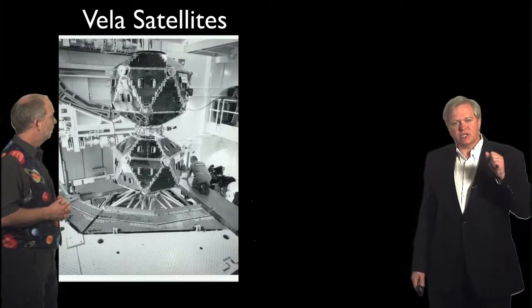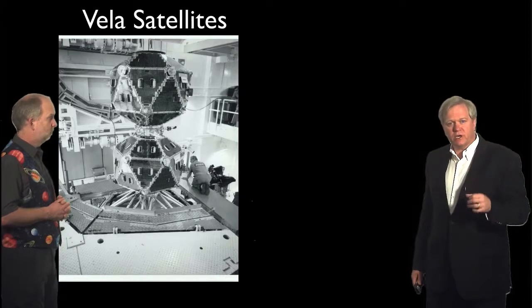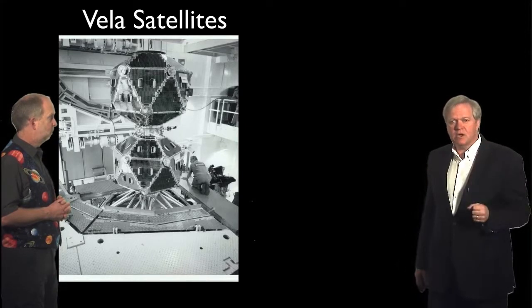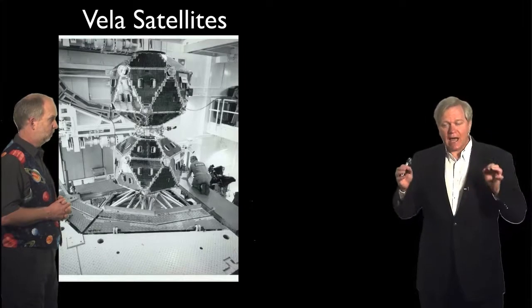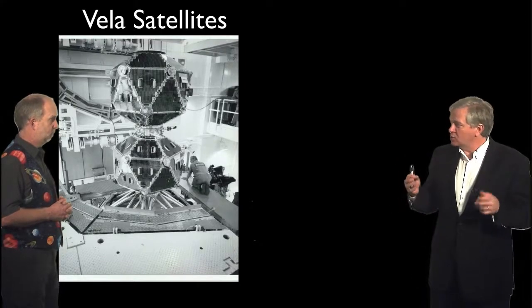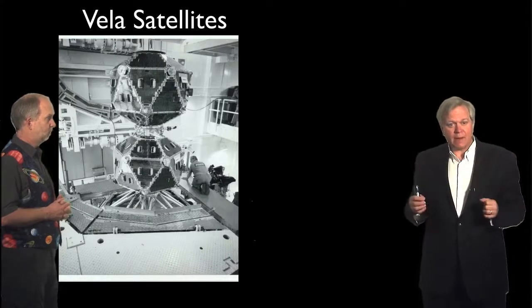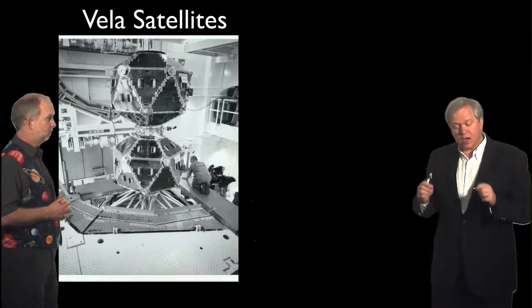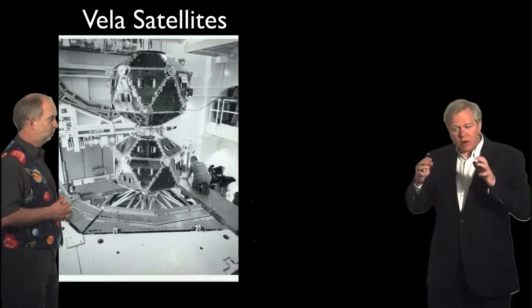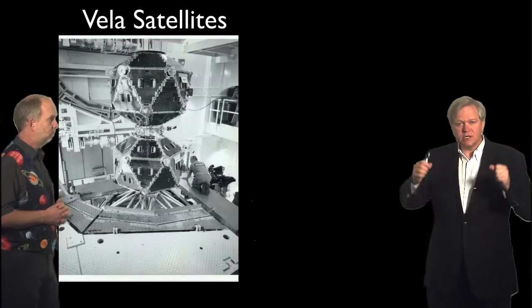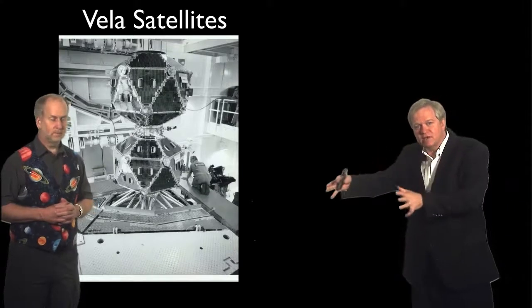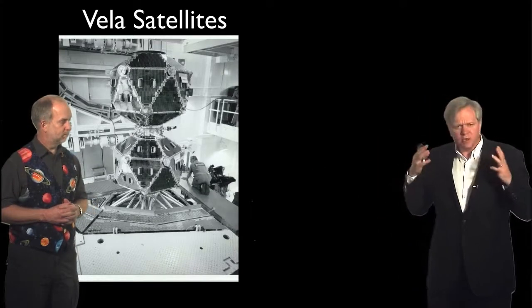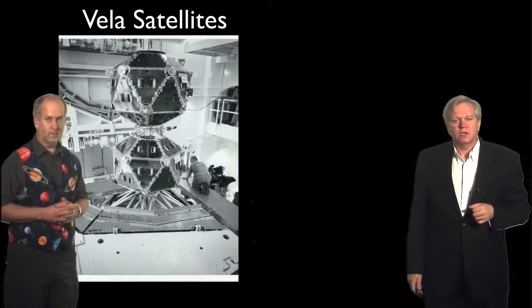And the idea is that these things had what we called scintillators, big pieces of sodium iodide crystals that could detect gamma rays. Now, nuclear explosions, it turns out when they go off in the atmosphere or in space, produce a very characteristic pulse, a pulse of gamma rays that fade away, and then another set of gamma rays that sort of leak out over a few seconds. And so, they're pretty sure what to look for.